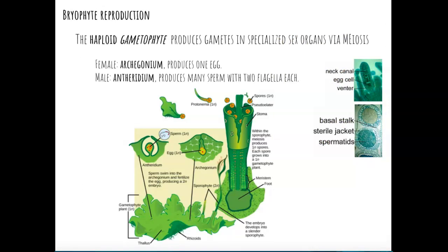In bryophytes such as mosses, reproduction occurs through the haploid gametophyte, which produces gametes and specialized sex organs. Within a single bryophyte, there are both male and female structures. The male part is called the antheridium, and it produces many sperm, each with two flagella. The female part is called the archegonium, which produces one egg. We consider the part that creates the mobile gamete — the sperm — to be male, and the part that creates the stationary gamete — the egg — to be female.